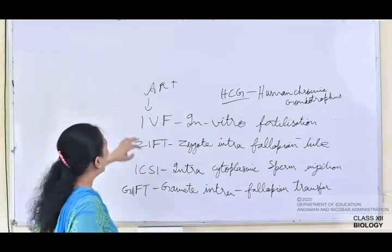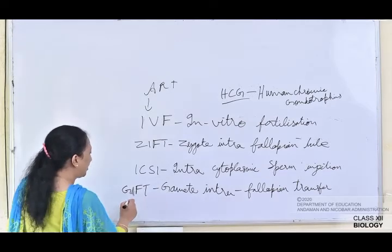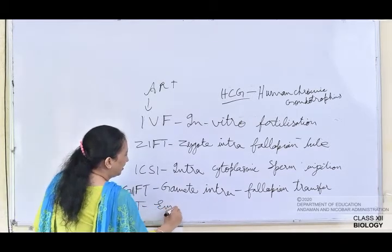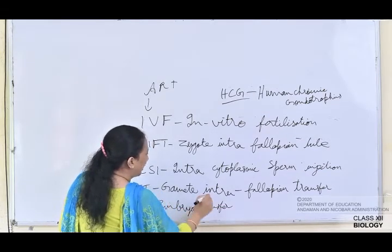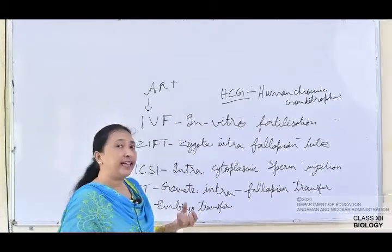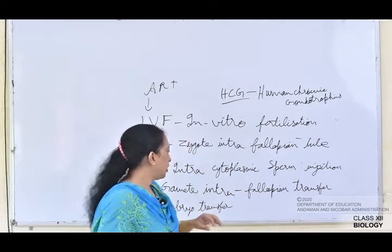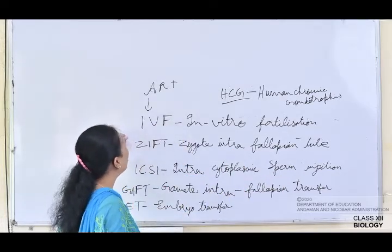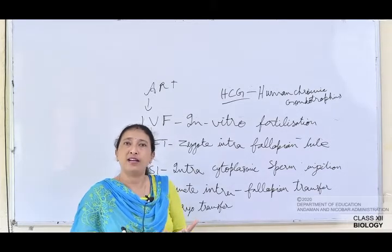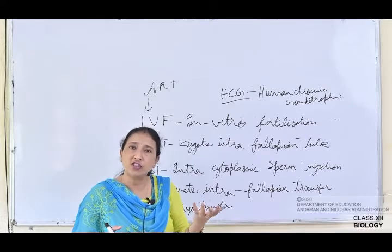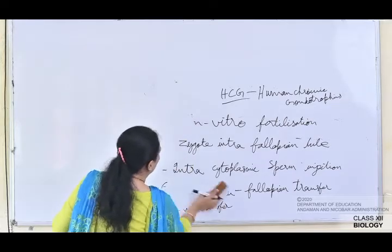The various ART methods are IUI, IVF, ICSI, GIFT, and also ET — Embryo Transfer. In embryo transfer, artificial insemination is performed outside the body, the embryo is formed, and then transferred into the uterus. By these methods, couples who are unable to have a child of their own can conceive.